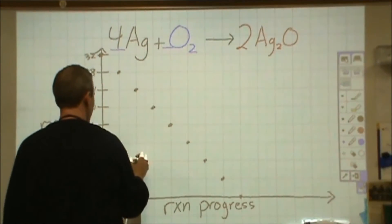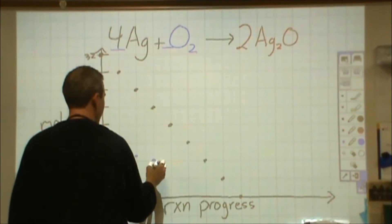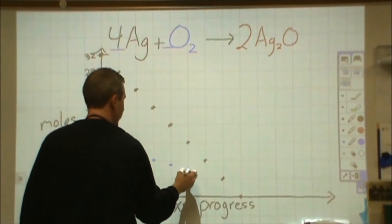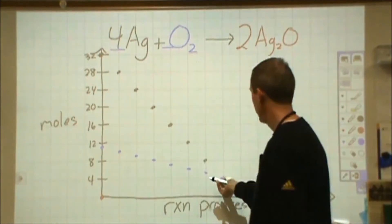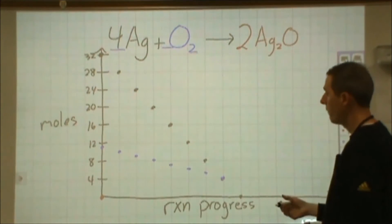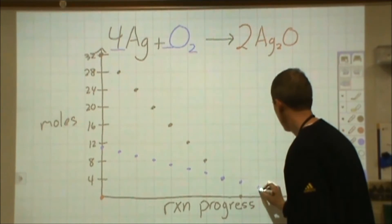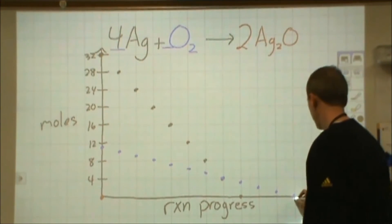So I'm going to go from 11 to 10 to 9, 8, 7, 6, 5, 4. Now at this point, I now have equal quantities. I have four moles of each, continuing on three to two to one to zero.